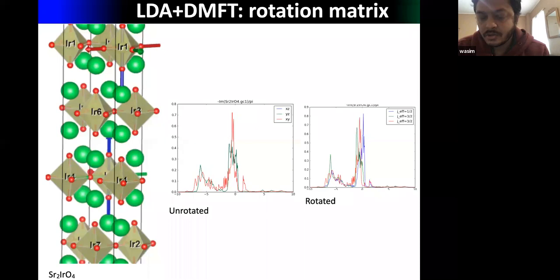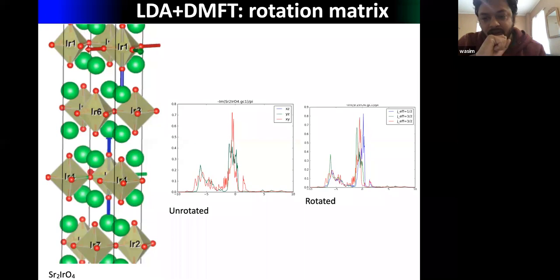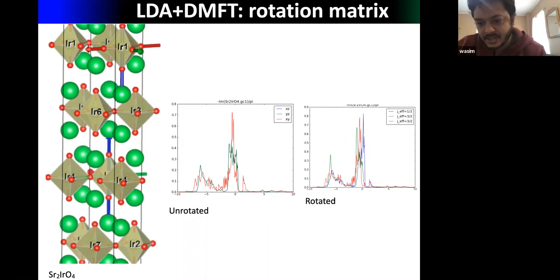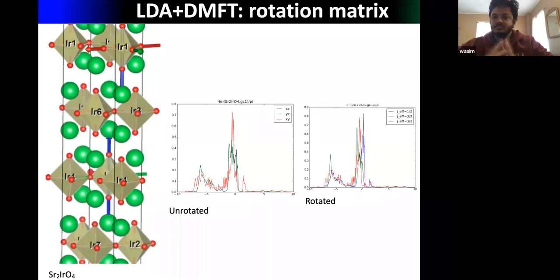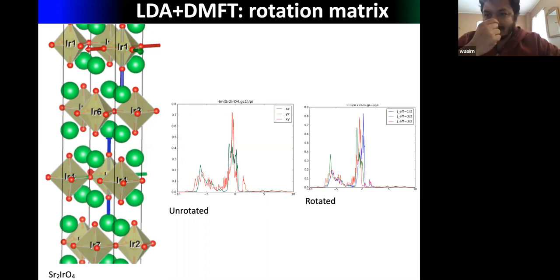In general DMFT is rotationally invariant, but there are real issues here. The solution is to rotate the system — play with the rotation matrix of the central atom — so that the three orbitals are no longer mixed but separated from each other. After rotation, the density of states shows the blue orbital slightly shifted, the green one shifted left, and the red one approximately at the Fermi level. This is also important for V₂O₃ calculations.